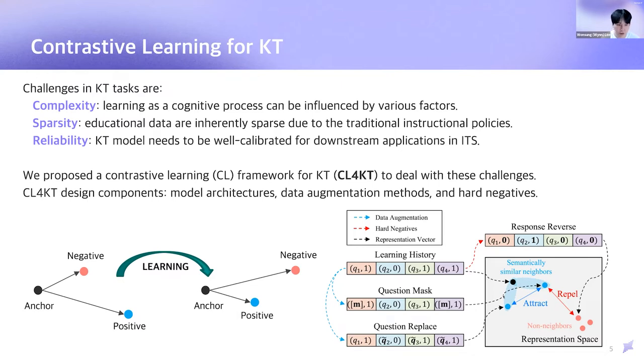The figure on the right shows the key idea behind our model. We obtained semantically similar examples of learning history through data augmentation, and dissimilar examples through hard negatives or in-batch negatives. After that, contrastive learning promotes positive pairs to be pulled closer together and negative pairs to be repelled in the representation space. This process is similar to the idea of triplet loss in the figure on the left.